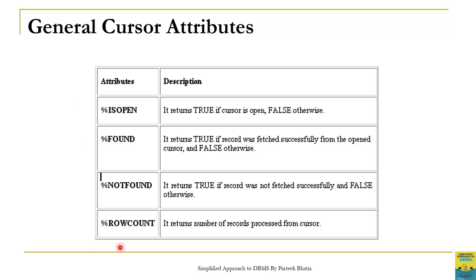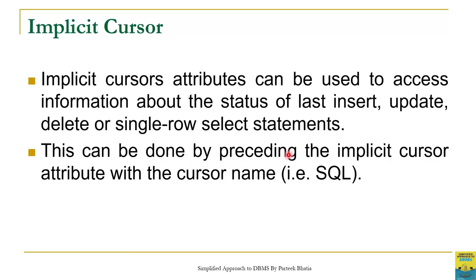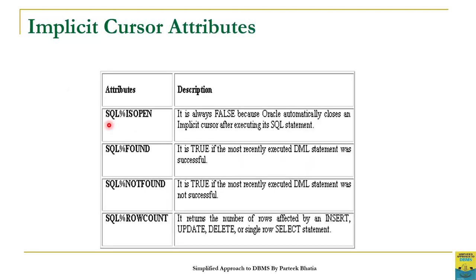These cursor attributes are common for both implicit and explicit cursors. In order to use them for an implicit cursor, we have to precede these cursor attributes with the cursor name SQL. For example, SQL%IsOpen is an attribute of the implicit cursor, where SQL is the name of the implicit cursor. SQL%IsOpen will return true if the cursor is open, otherwise it returns false.